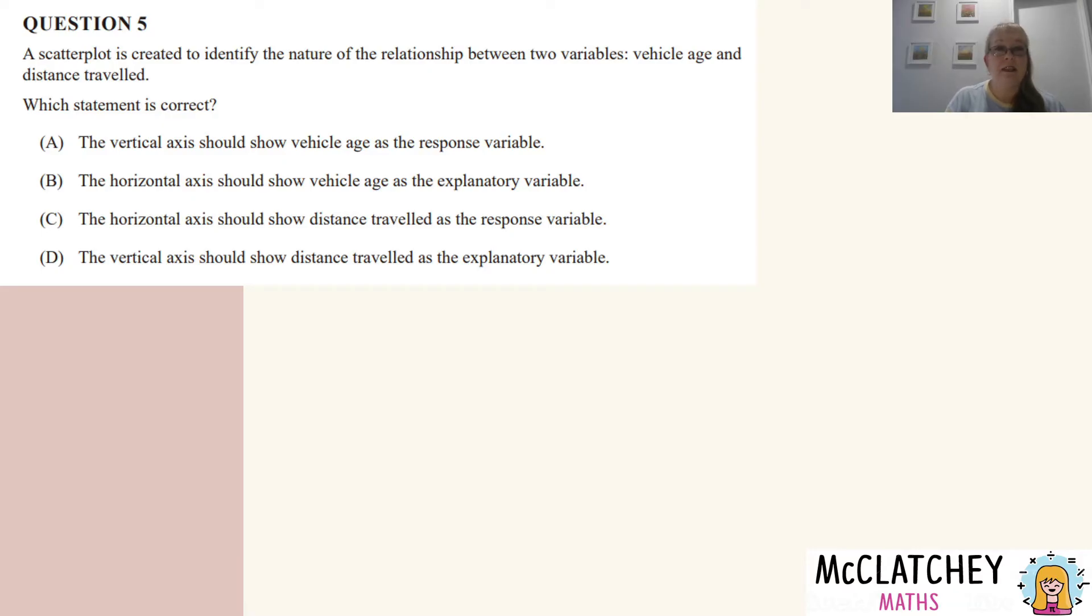Now this first one here, the vertical axis should show the vehicle age as the response variable. Now we've just said no to that one. We've said that the vertical axis, which is your y-axis should have distance traveled on it. The next one, the horizontal axis, that's this axis, the x-axis should show vehicle age as the explanatory variable. Now we've already said that the vehicle age should go on the x-axis. So that's already a first and that's our explanatory variable. So that's our correct answer B.